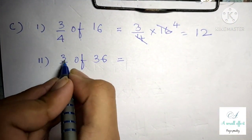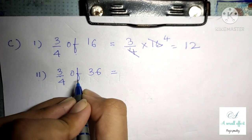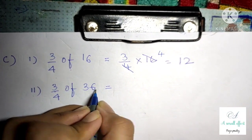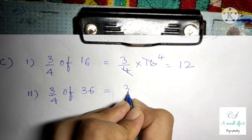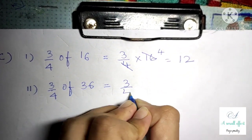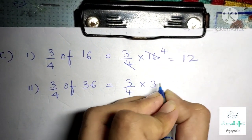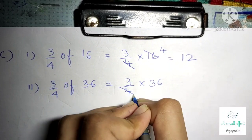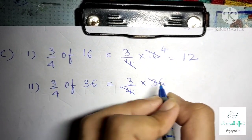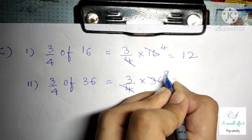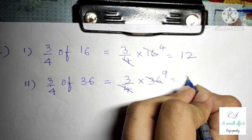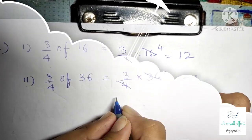Part 2 is 3 by 4 of 36. We can write this as 3 by 4 into 36. In the 4 times table, 36 comes 9 times, so 9 threes are 27.